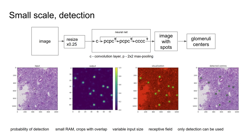For example, this empty glomerulus has low probability. The receptive field of the net is big enough to have good detection. Also, this net alone can be used, for example, to count the number of glomeruli.